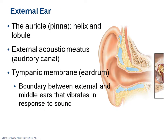The external ear is actually called the auricle — sometimes you'll see the word pinna, same thing. It encompasses two things: a helix and a lobule. The lobule is your ear lobe, and the top part is the helix.